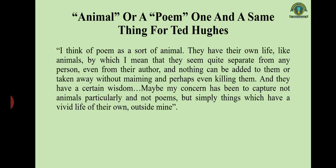As far as animal imagery in Ted Hughes's poetry is concerned, animal and poem are one and the same thing for Hughes. This is his own quotation from his book Poetry in the Making: 'I think of a poem as a sort of animal. They have their own life like animals, by which I mean that they seem quite separate from any person, even from their author.' He says animals have their own existence and identity, separate from the author who creates them. 'Nothing can be added to them or taken away without maiming and perhaps even killing them.' Maiming means to injure — a good poem is a complete whole with its own existence.